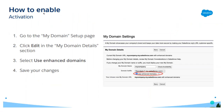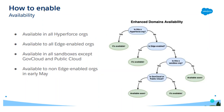To enable enhanced domains: go to My Domain setup, click on the My Domain Details section, select 'Enhanced Domain,' then select 'Use a Named Domain,' and save your changes. That is how you enable My Domain with enhanced domains.